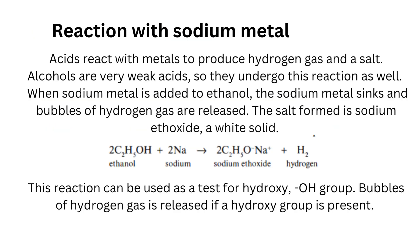The next reaction is with sodium metal. Acids react with metals to produce hydrogen gas and a salt. Alcohols are very weak acids, so they undergo this reaction as well. When sodium metal is added to ethanol, the sodium metal sinks and bubbles of hydrogen gas are released. The salt formed is sodium ethoxide, a white solid. Ethanol plus sodium gives sodium ethoxide and hydrogen. This reaction can be used as a test for the hydroxy group: bubbles of hydrogen gas are released if a hydroxy group is present.